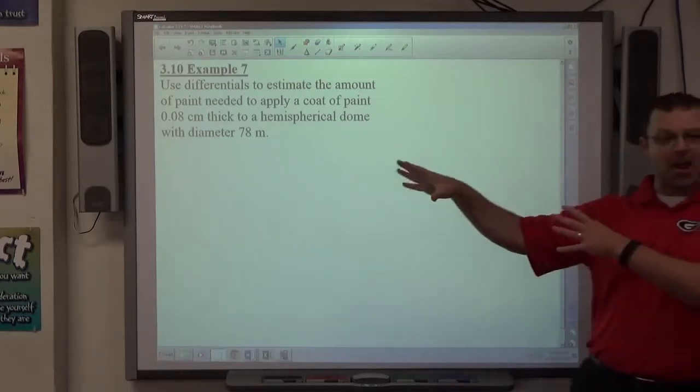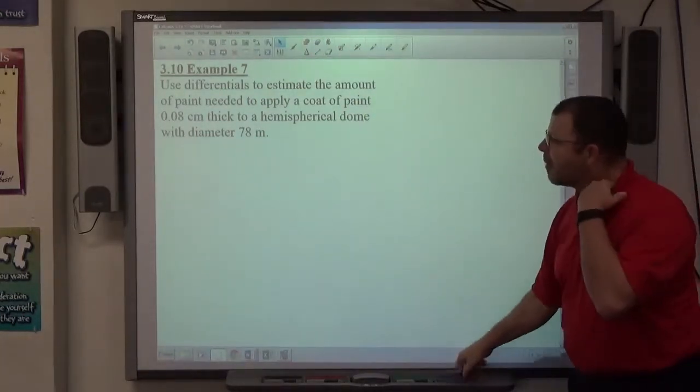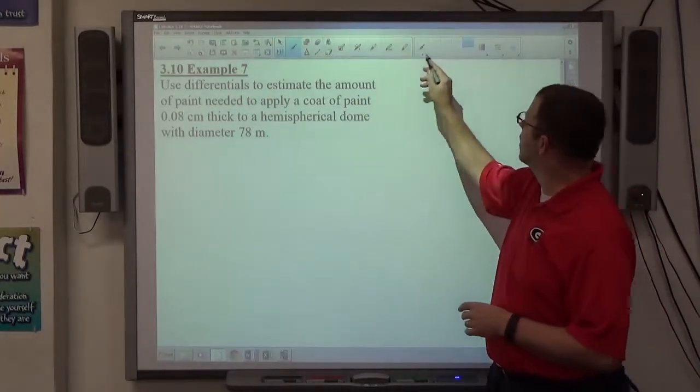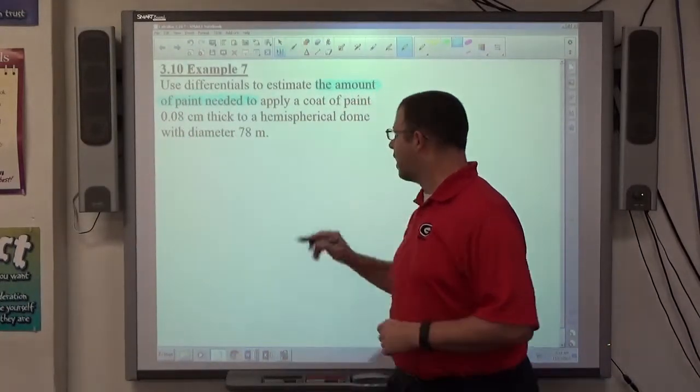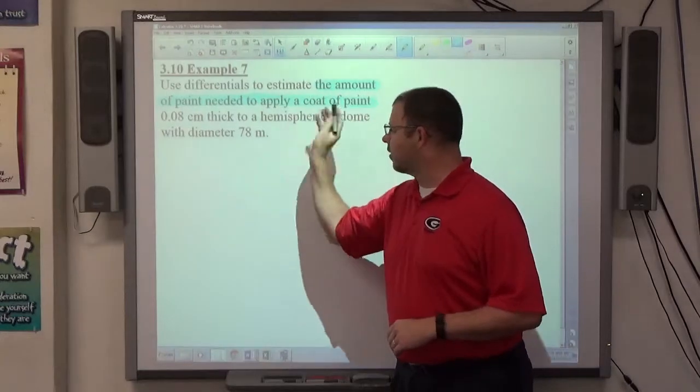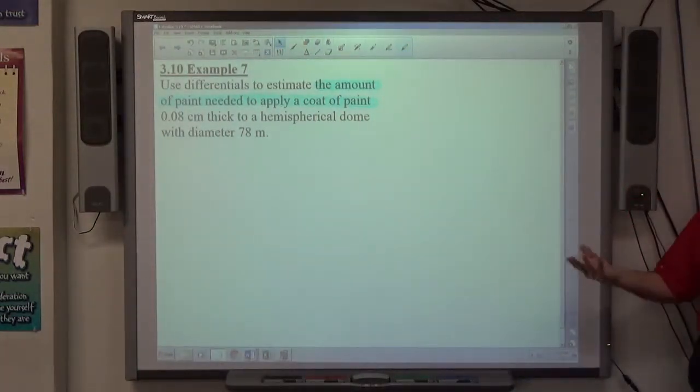So again, the last one said errors, so it's use differentials, this one actually says use differentials. Alright, so amount of paint, so what we have to consider here is what is needed to apply a coat of paint. So what you have to do is ask yourself, going back to geometry and remembering everything we've ever learned about geometry, if I want to know how much paint's needed to paint something, I need to understand what measurement I'm looking for here.